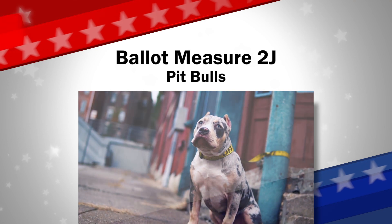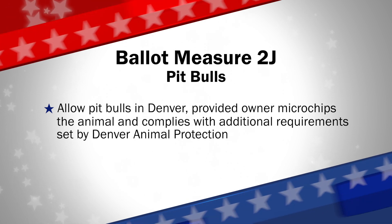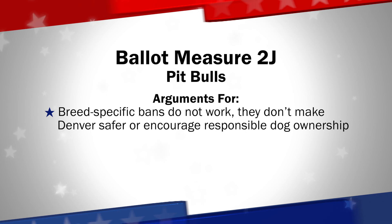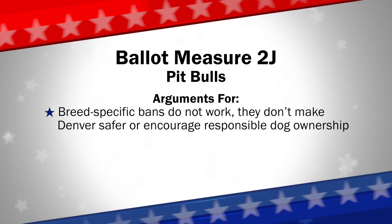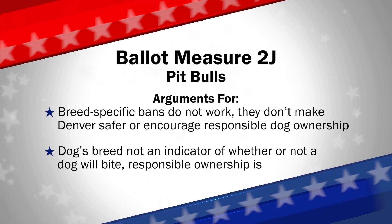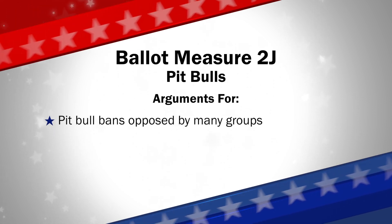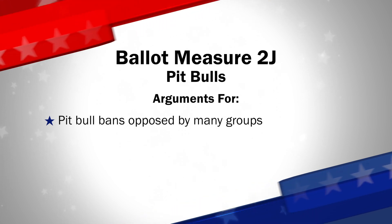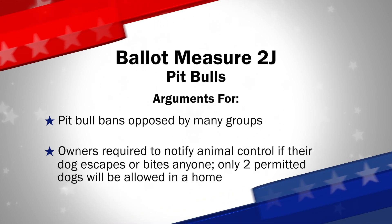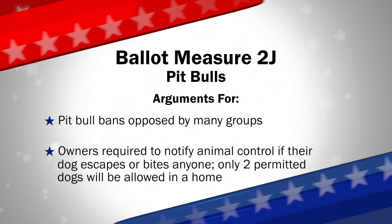Next up is question 2J, which would allow pit bulls in Denver, provided the owner microchips and spays or neuters the animal and complies with additional requirements set by Denver Animal Protection. Those in favor of 2J say breed-specific bans do not work, they don't make Denver safer, and they don't encourage responsible dog ownership. A dog's breed is not an indicator of whether or not a dog will bite — responsible ownership is. There are no controlled studies showing pit bulls are any more dangerous than any other breed, and pit bull bans are opposed by groups including the Humane Society, the American Veterinary Medicine Association, the ASPCA, and the American Bar Association. Owners will be required to notify animal control if their dog escapes or bites anyone, and only two permitted dogs will be allowed in a home.